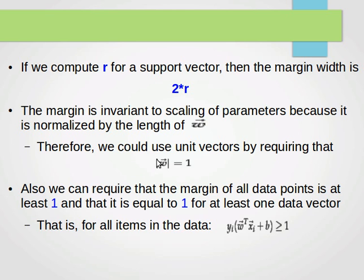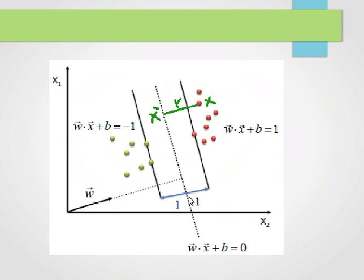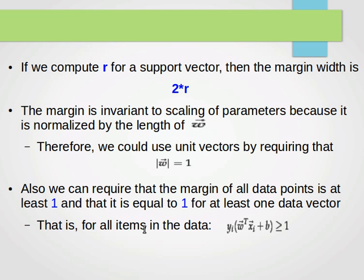The norm is sometimes written with double bars rather than single bars — it's the same thing. We can also require that the margin of all data points is at least one, and equal to one for at least one data vector. That point is the support vector. The distance r for the support vector from the hyperplane is one in each direction.